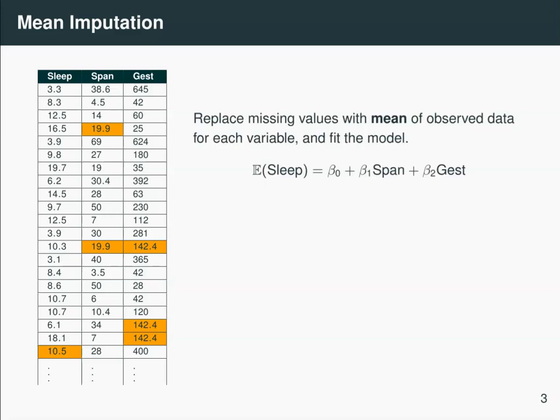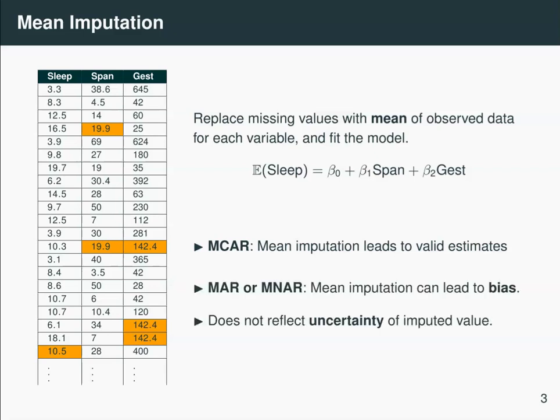Having imputed the missing values, you would then fit the model on this complete dataset. Now similarly to complete case analysis, this approach is only really appropriate when you have data that's missing completely at random. If you have missing at random or missing not at random, you're likely to incur bias in your results.